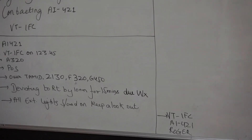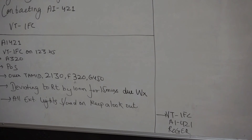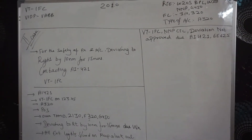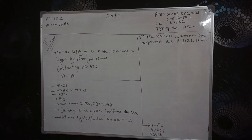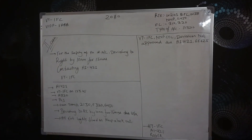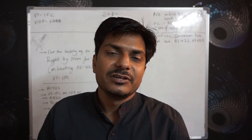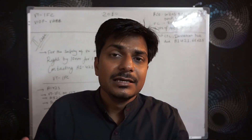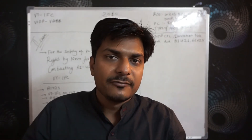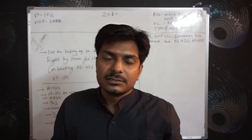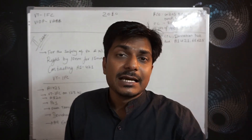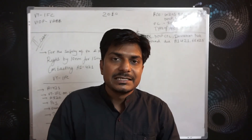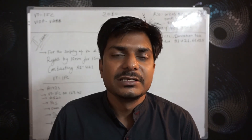Air India 421 replied: Victor Tango India Foxtrot Charlie, India 421 — Roger. He acknowledged all my information and had no problem with it. We have now completed the weather deviation format for the case when ATC does not approve the deviation. This is how you contact ATC, reply to ATC, and then coordinate with the nearby conflicting traffic.